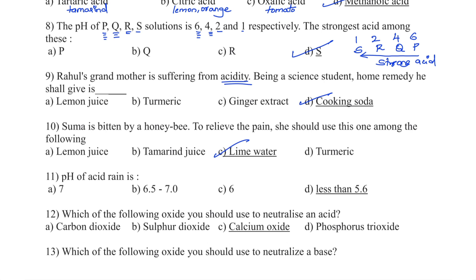Question number 11. The pH of acid rain is: Option A — 7, B — 6.5 to 7.0, Option C — 6, Option D — less than 5.6. You have to remember that the pH of acid rain will always be less than 5.6.